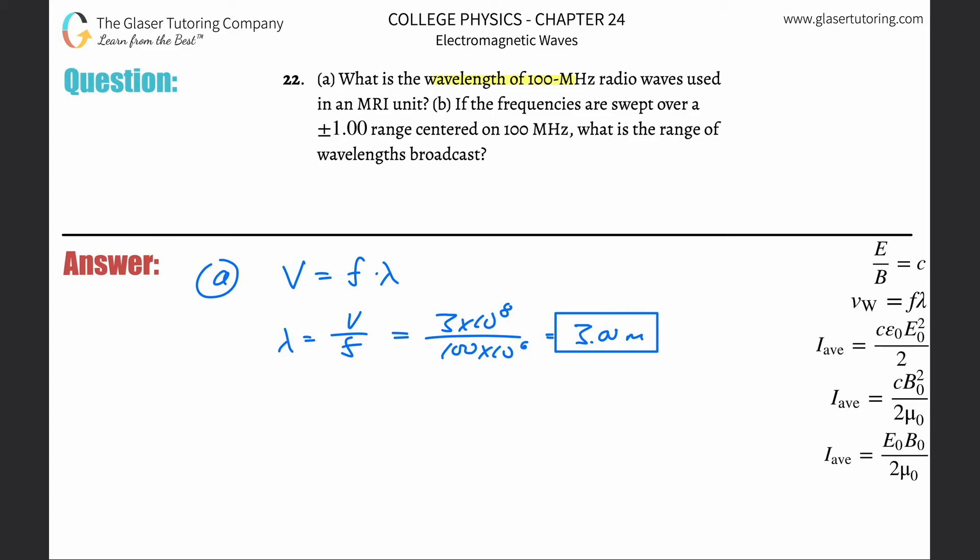Now letter B. So letter B says, if frequencies are swept over a plus or minus one range centered on 100 megahertz, what is the range of wavelengths broadcast? So basically we're literally doing the problem again.